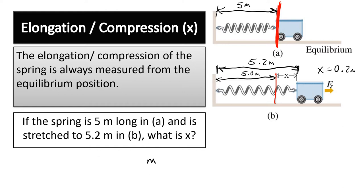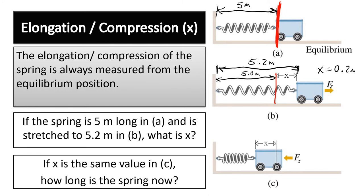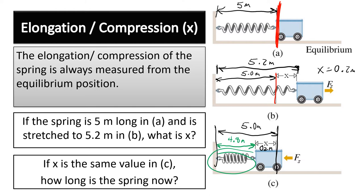If x is the same value in a compression scenario — 0.2 meters — and the equilibrium length is still 5.0 meters, how long is the spring now? You do 5.0 minus 0.2 to get 4.8 meters. The key point: x is the distance from equilibrium, and you may need to calculate it from the given spring lengths.